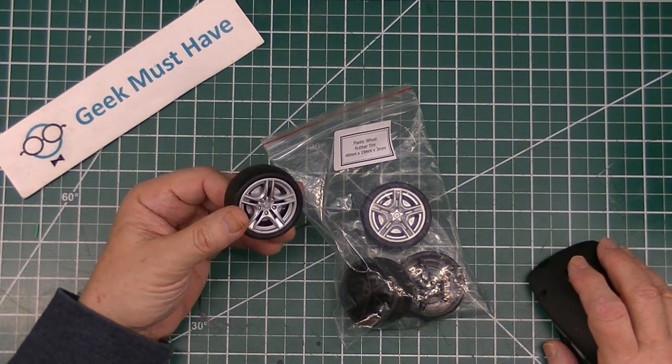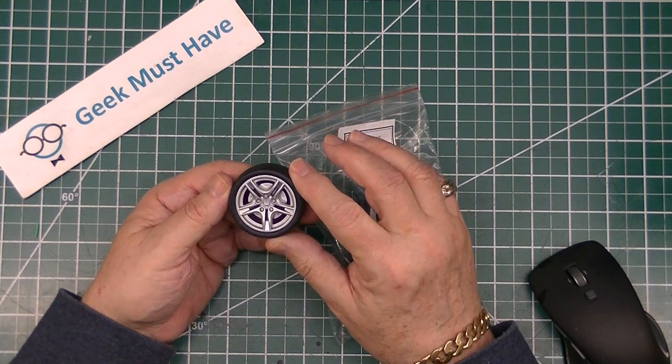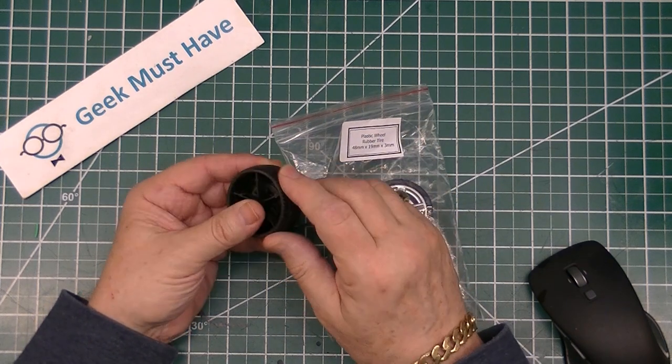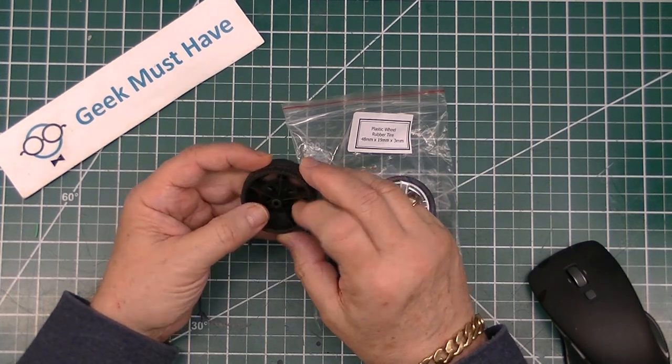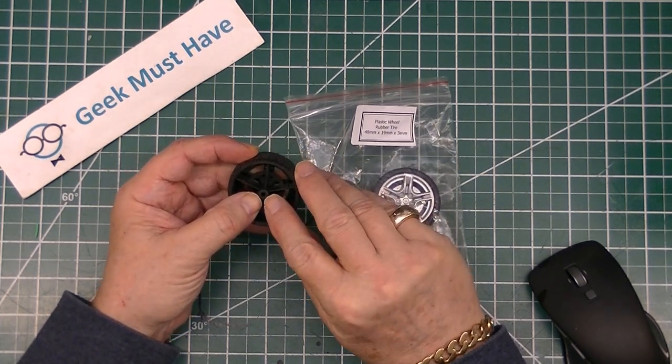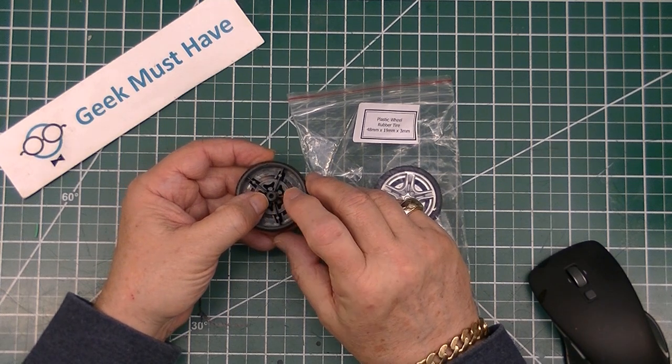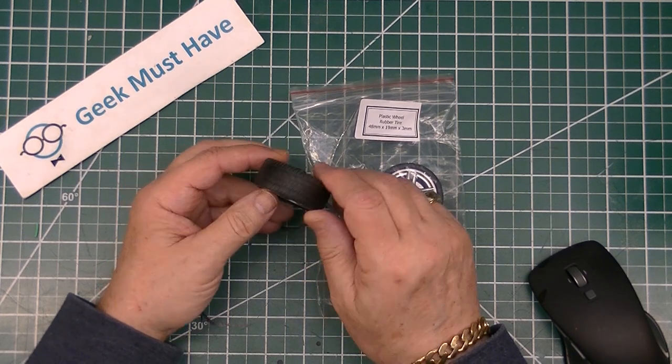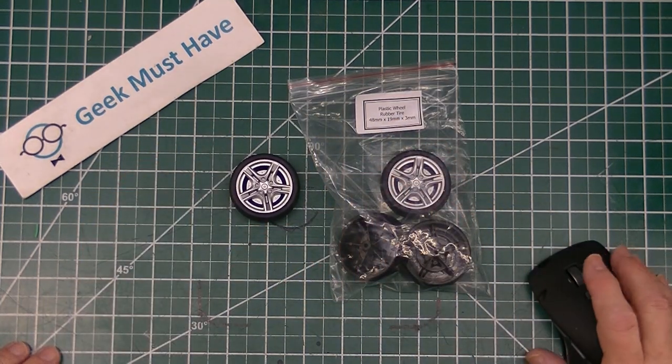This item is a set of 48 millimeter wide rubber tires on a little plastic rim with what appears to be about a 3 millimeter shaft or a 3 millimeter hole for the shaft. These are pretty nice looking. They look like little mag wheels.